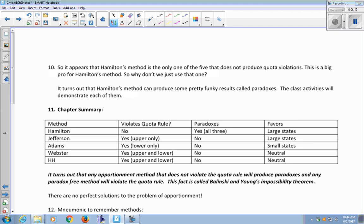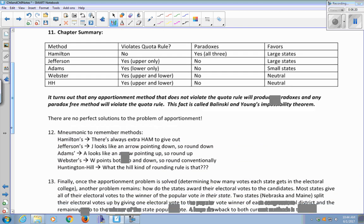The class activities will demonstrate each of them, so as you work through the class activities, you'll be introduced to three interesting paradoxes that can happen with Hamilton's method. So here's a little bit of a summary of which of the five methods violate the quota rule, which of the five methods produce paradoxes, and whether they favor large states or small states. And it turns out that any apportionment method that does not violate the quota rule will produce paradoxes, and any paradox-free method will violate the quota rule. And this is called Balinski and Young's Impossibility Theorem. So it turns out that, just like with voting, there are no perfect solutions to the problem of apportionment.